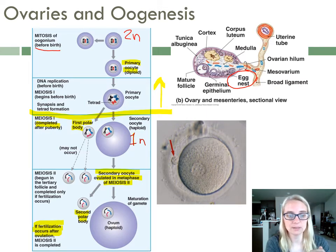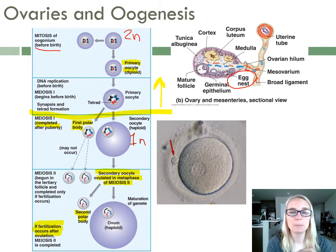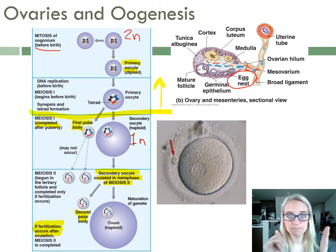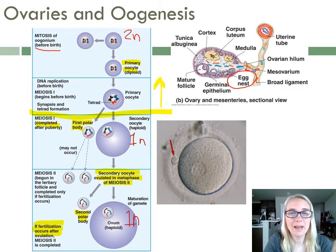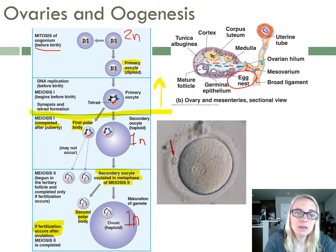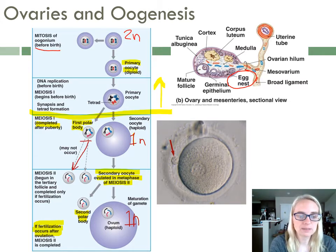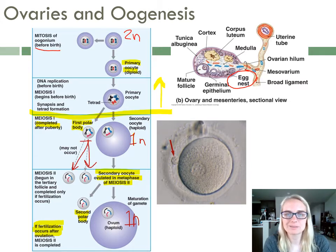This ovulated oocyte will only finish — split those sister chromatids apart — if fertilization occurs after ovulation. So it's ovulated with the sister chromatids stuck together. If a sperm penetrates the egg, it will quickly go through meiosis two, splitting those chromatids and producing the second polar body. The second polar body is haploid — it only has one of each of the chromosomes — and just like the first polar body, it is non-functional. So what we end up with is one ovum, haploid, and we have two polar bodies.